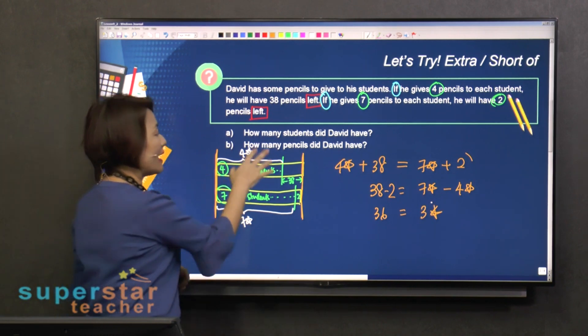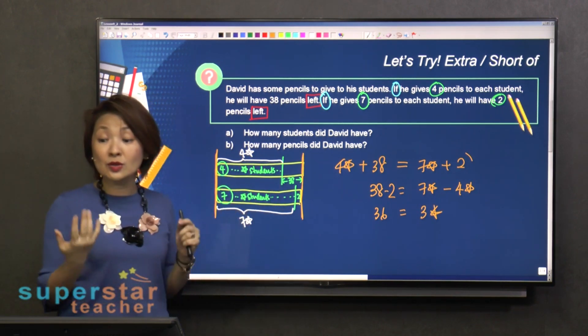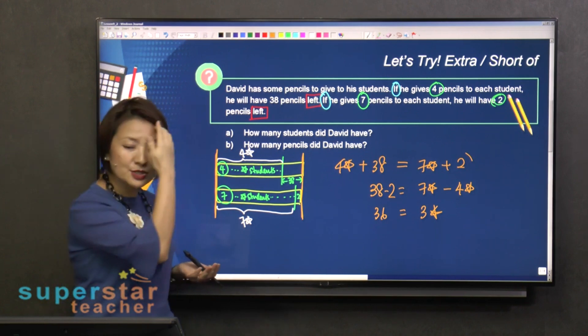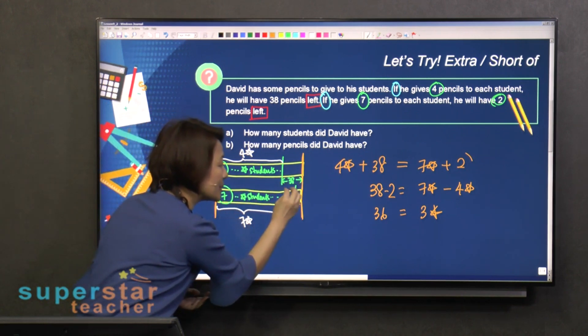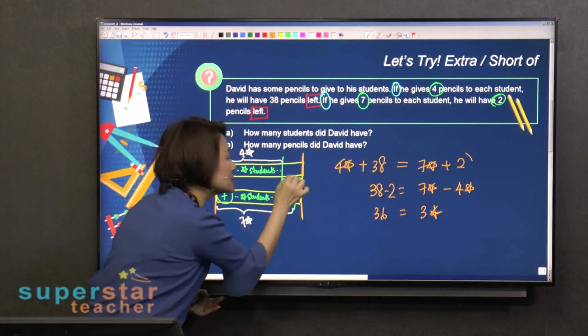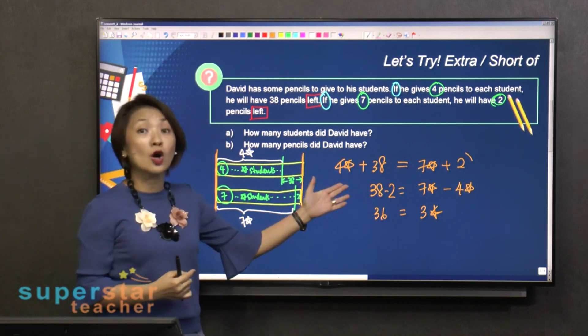Earlier on, when we did everything on the model, it was also three star equals to 36. It's just that it can get a bit messy here, because if this part is very small, it gets very messy. So you might want to consider using this.